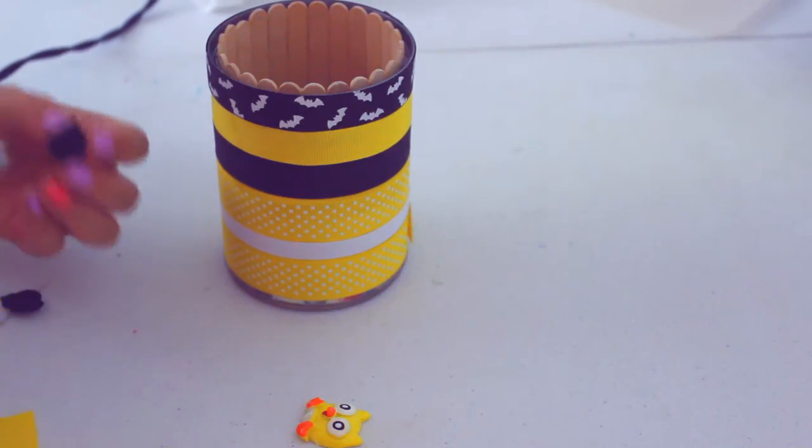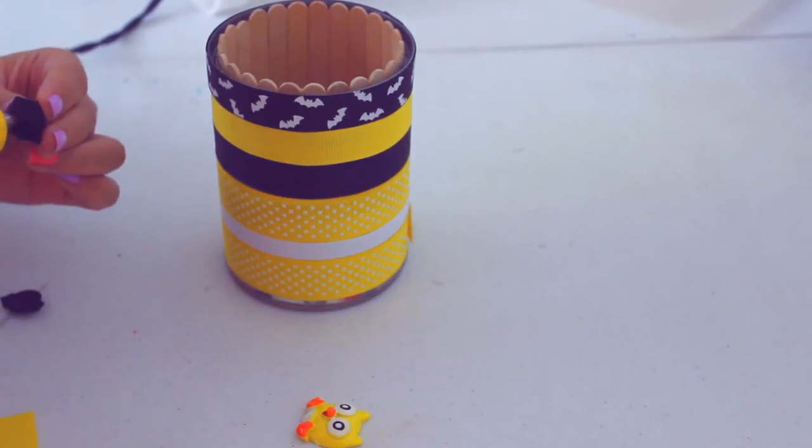After all that is done, I arranged my cabochons to the way I wanted and then I just use hot glue and glue those onto the can.